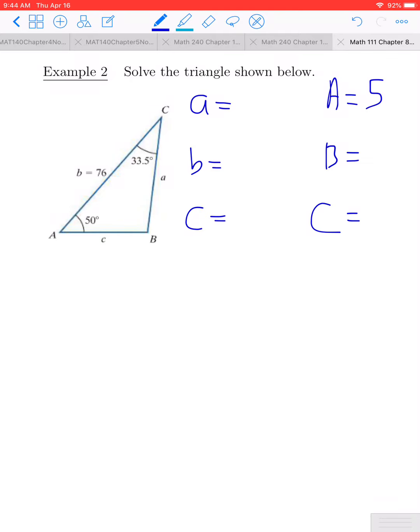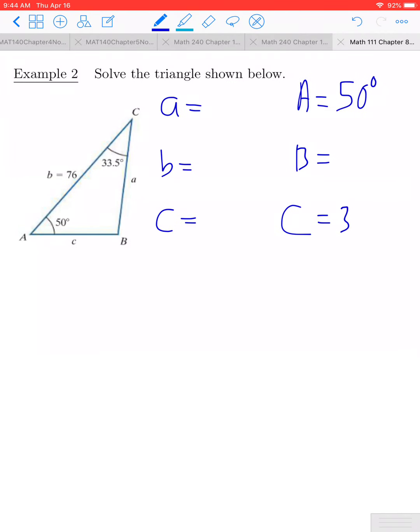Starting off, we know that the measure of A is 50 degrees, the measure of C is 33.5 degrees, and we also know that side B is 76.